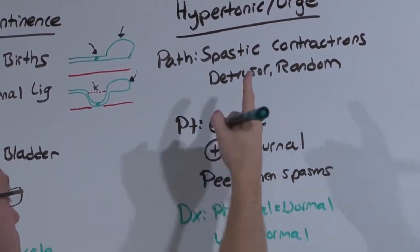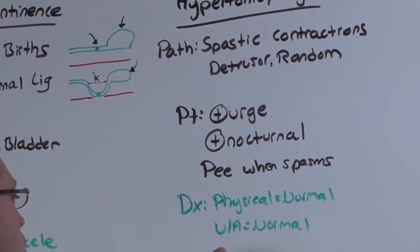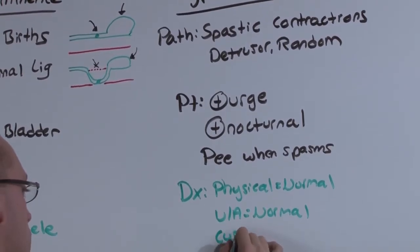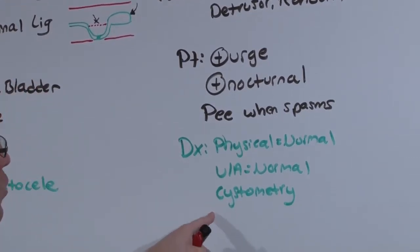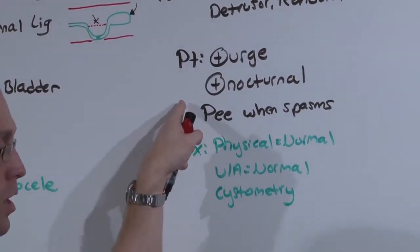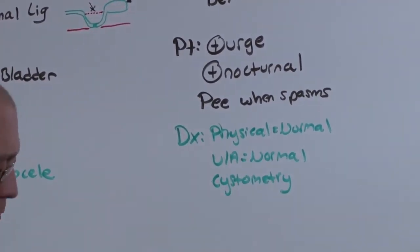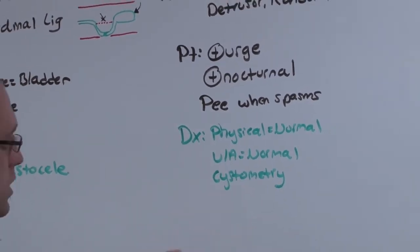If you suspect hypertonic or motor urge incontinence, you do want to use cystometry. That will definitively diagnose them. You don't need to do cystometry because you can usually get it from the history, but this is the best test. I'll show you what cystometry looks like in just a second.